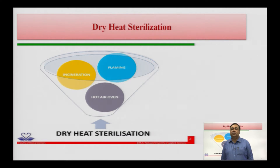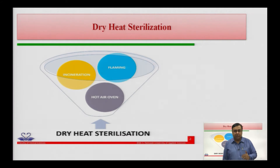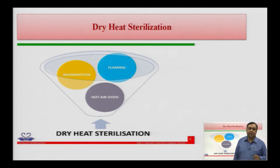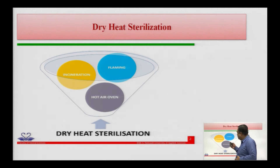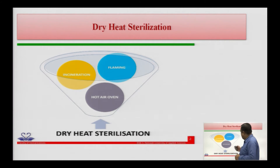What do we mean by dry heat sterilization? The term dry means there is no moisture. Therefore, whenever we use a method of sterilization using heat where the heat has not originated from steam or water, we call it dry heat sterilization. We have three or four methods: one is incineration, the second is flaming, and the third is hot air oven.